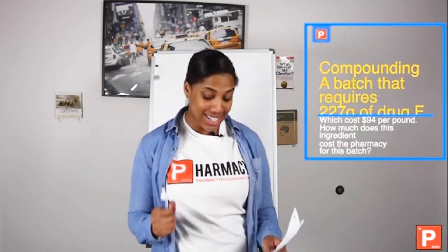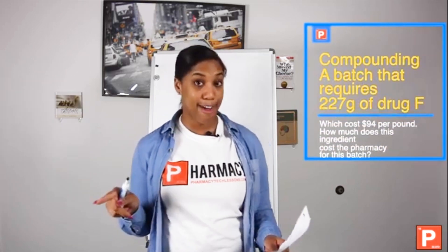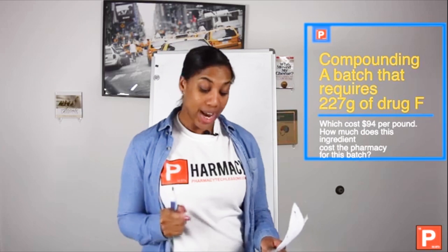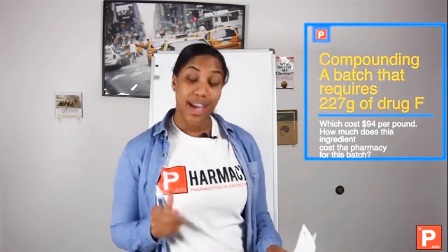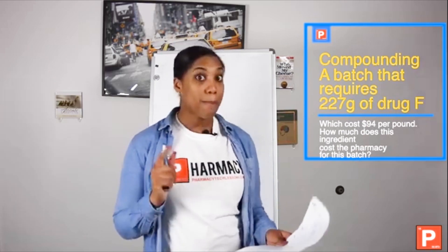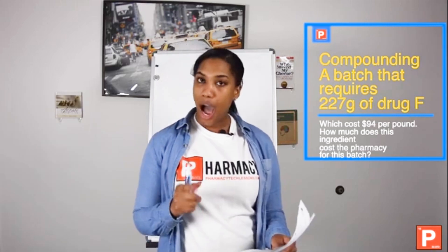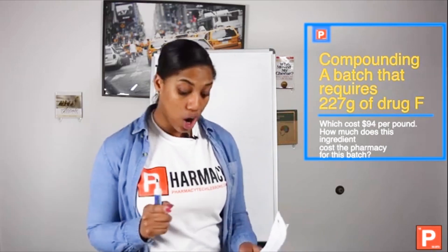are compounding a batch that requires 227 grams of drug F, which costs your pharmacy $94 per pound. How much does this ingredient cost the pharmacy for this batch?